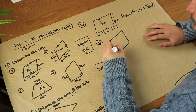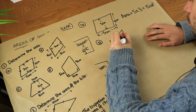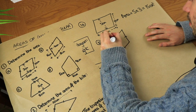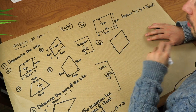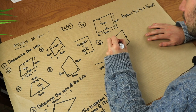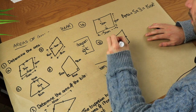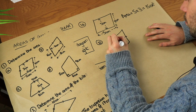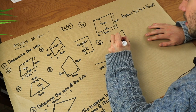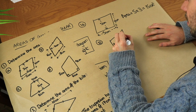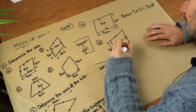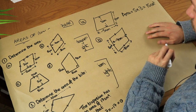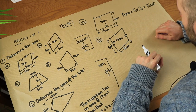What about b? This is in fact a rhombus because all the sides are the same length. But a rhombus is just a special case of a parallelogram because a rhombus still has two pairs of parallel sides. Again, one of these lengths is a bit of a red herring.